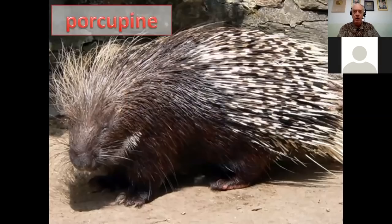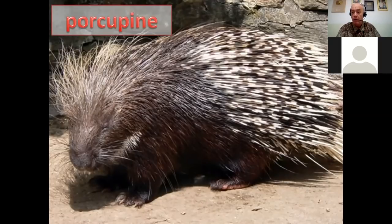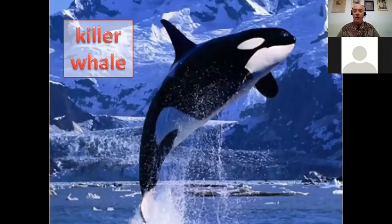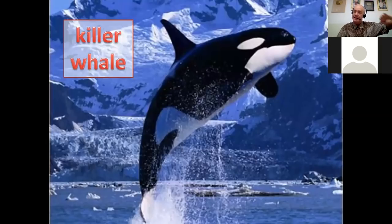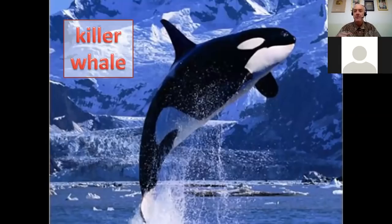The porcupine — look at those spines, they're very dangerous. You be very careful. Do you have those in Indonesia? The killer whale — that is a very huge animal. It is around Vancouver, it is in the ocean, and he is jumping right now. He will eat seals for lunch. The killer whale is a majestic Canadian animal.